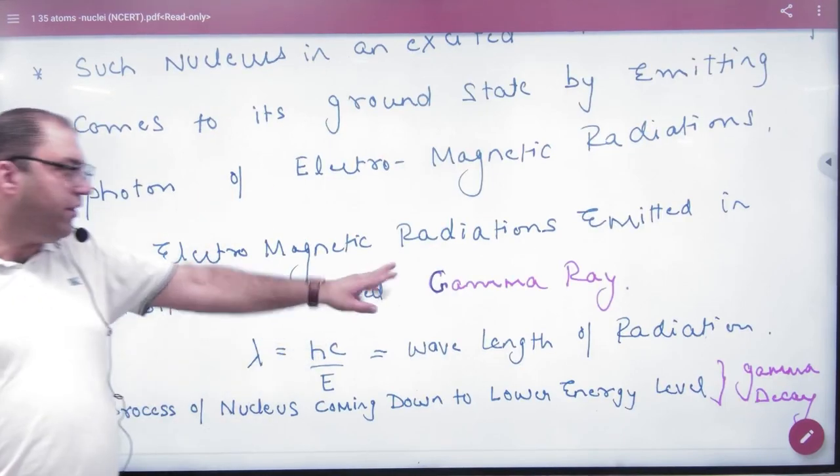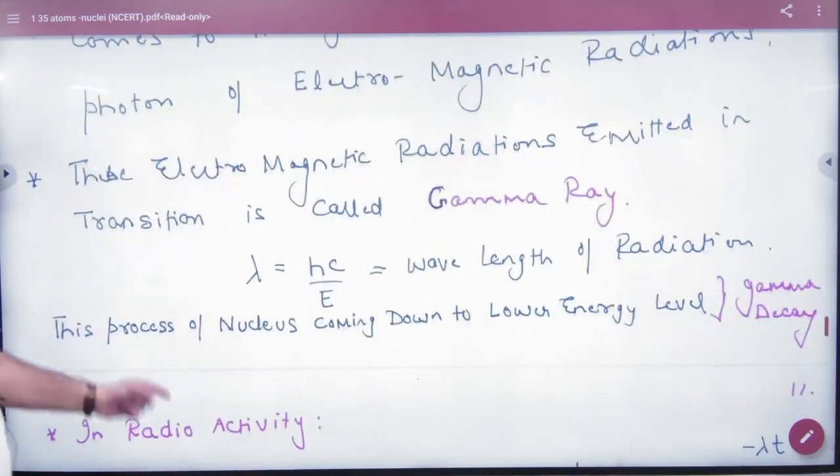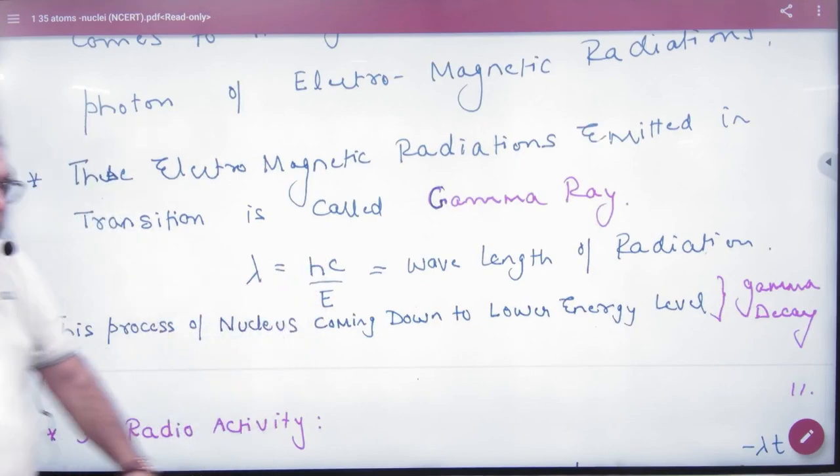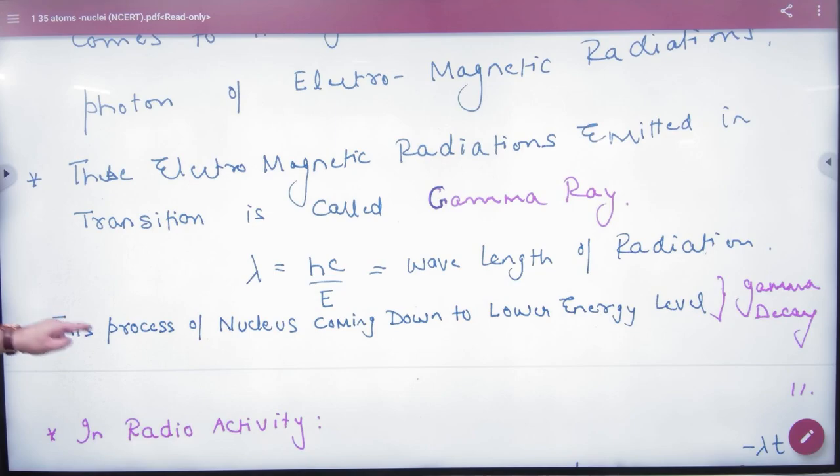We call this EM radiation gamma rays. The wavelength is λ = hc/E. This process of nucleus coming down to lower energy state is known as gamma decay.